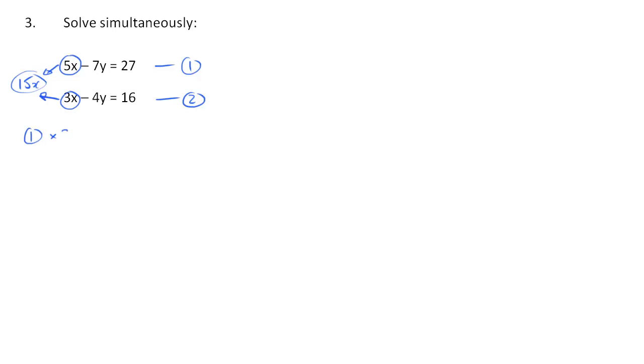So to do that, I would take equation 1 and triple it, times the whole thing by 3. So 5x times 3 is 15x. -7y times 3 is -21y. And then you've got 27 times 3, which is 81. So that's my new equation. Call it equation 3. Just quickly label it. And then we have to take equation 2 and make that have a 15x in, which means we have to times by 5. So 3x times 5 is 15x. And then we have -4y times 5, which is -20y. And 16 times 5, which is 80. So call that equation 4.